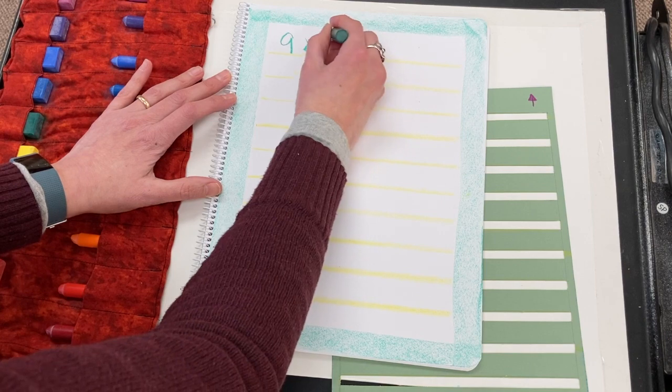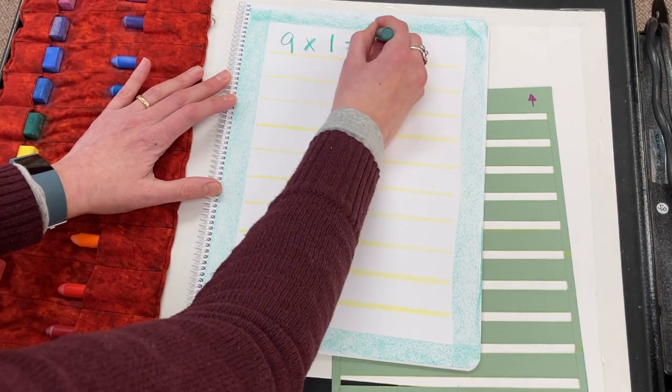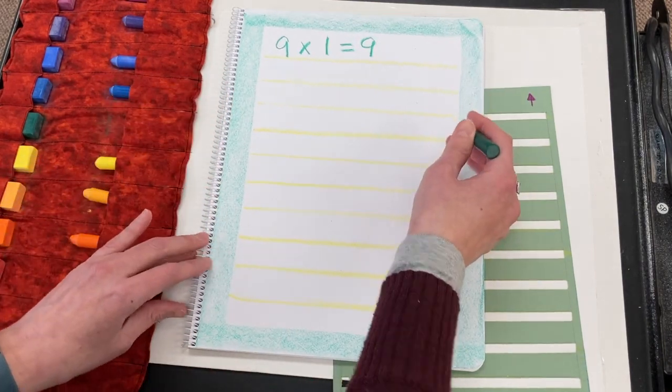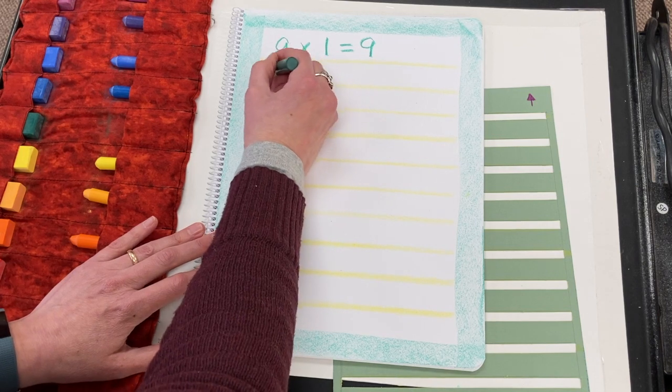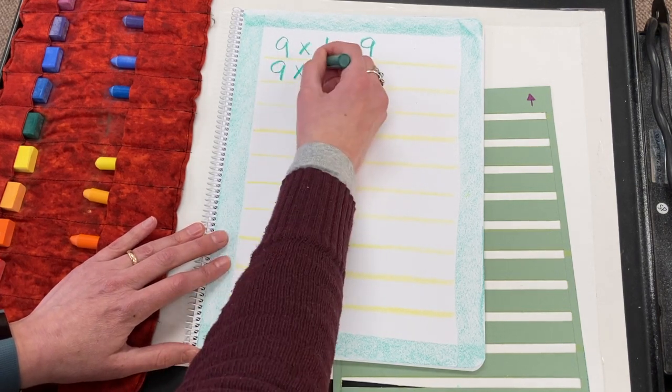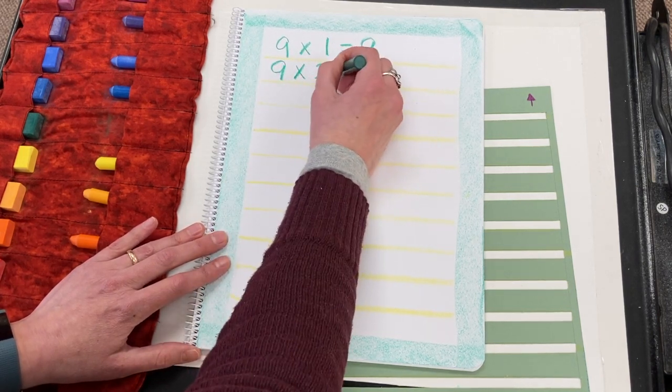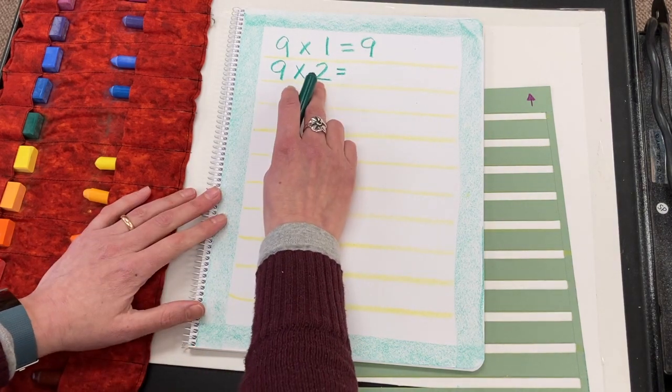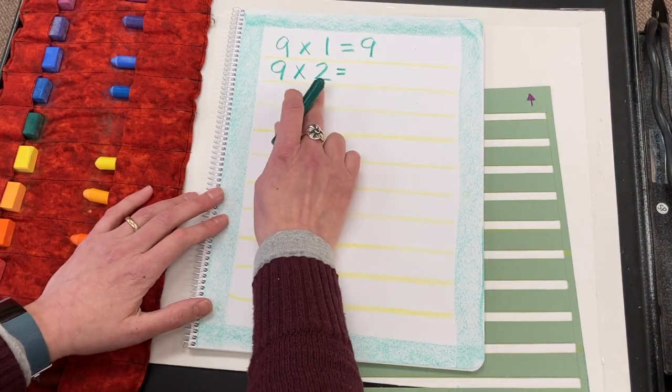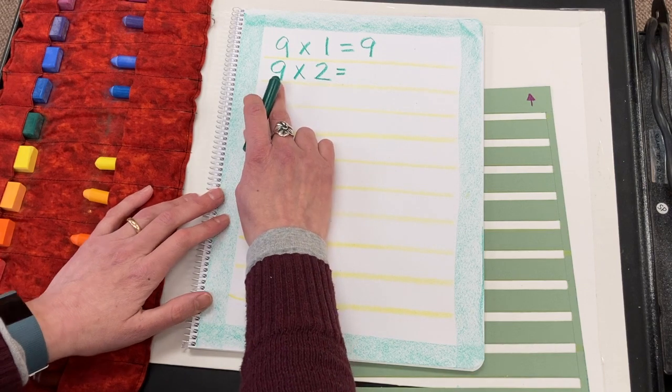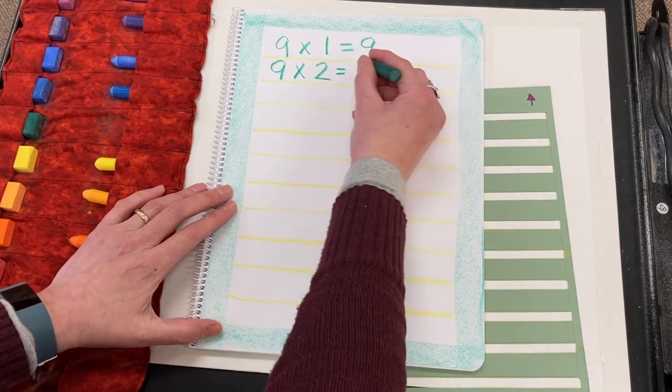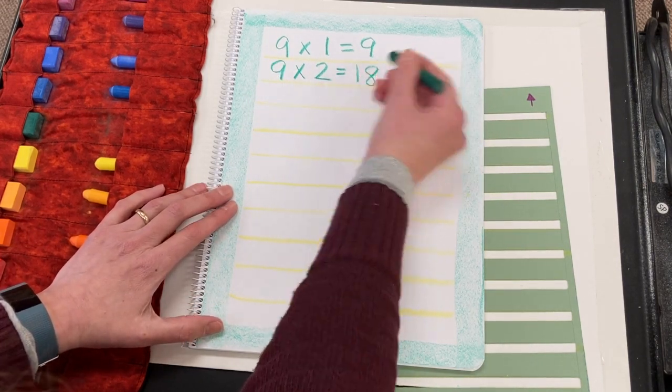Okay, so nines. 9×1, of course, is 9. And then 9×2. So the shoe, this was the giant with the shoe, it kicked into a sign and his foot was aching. 18.